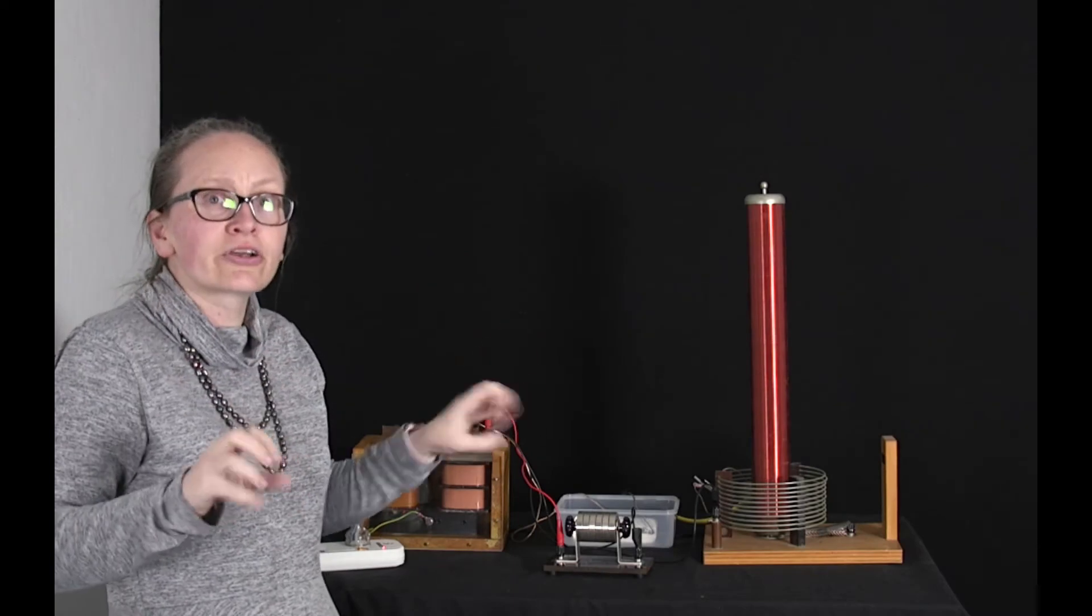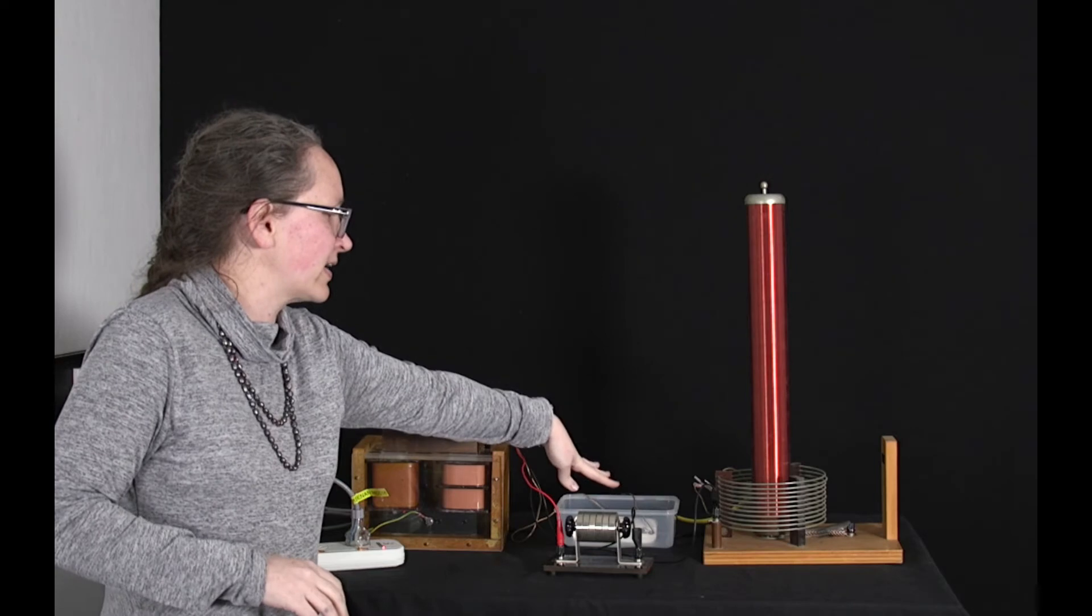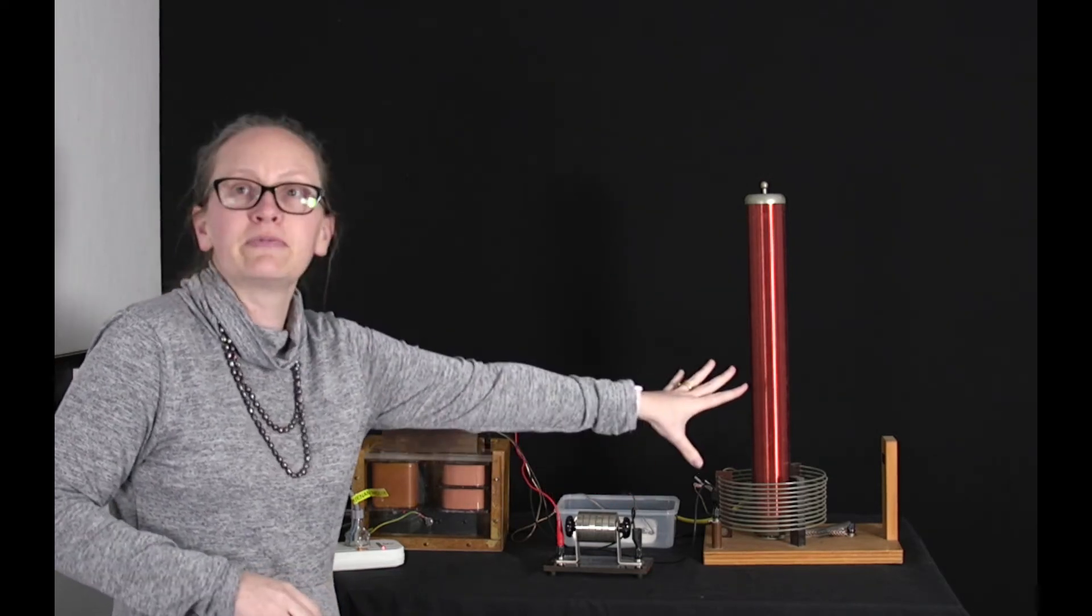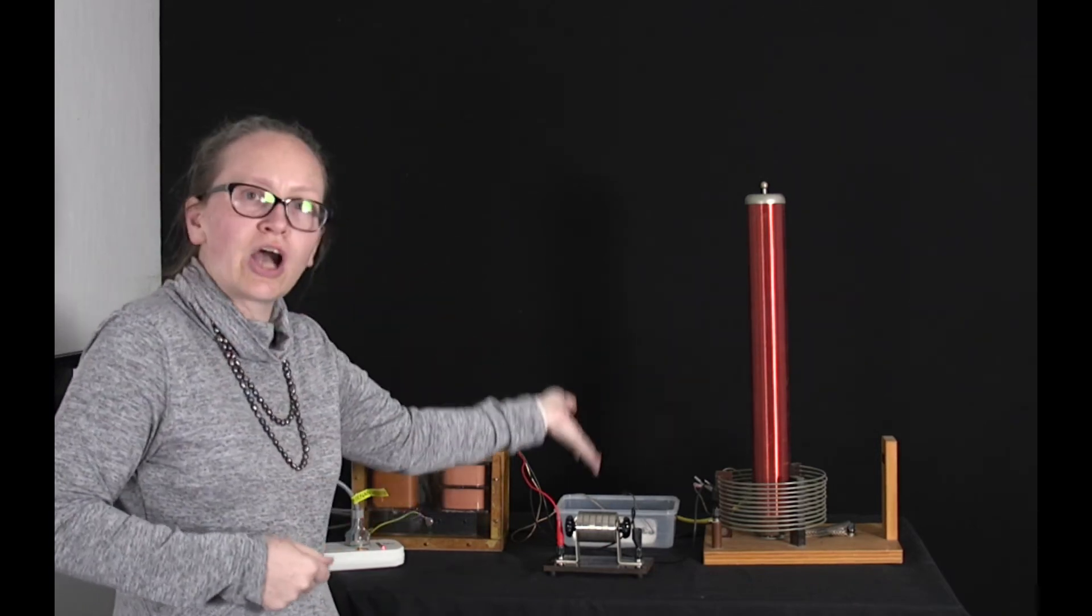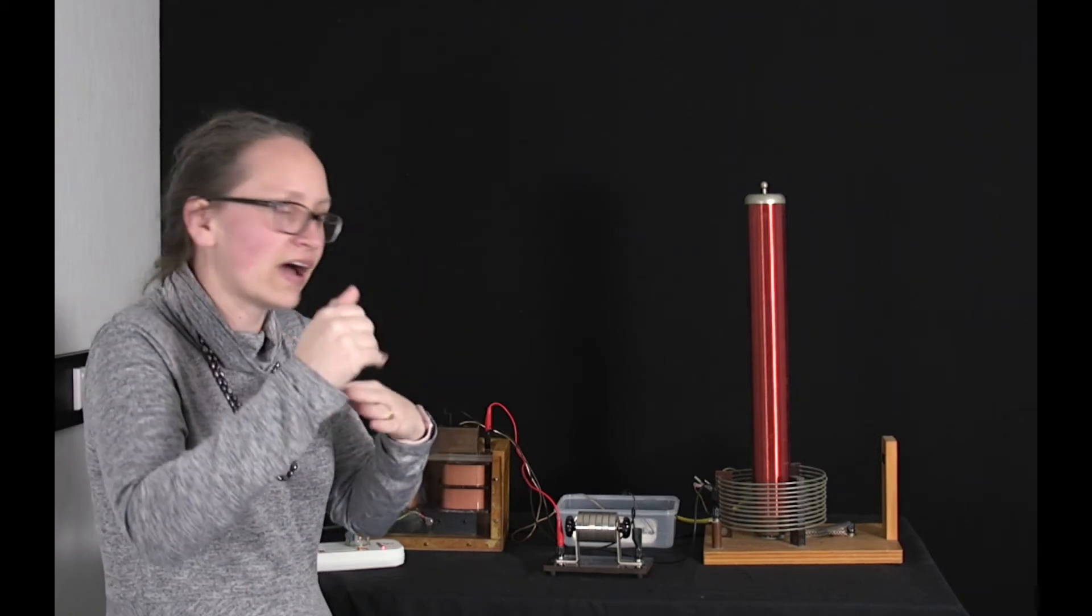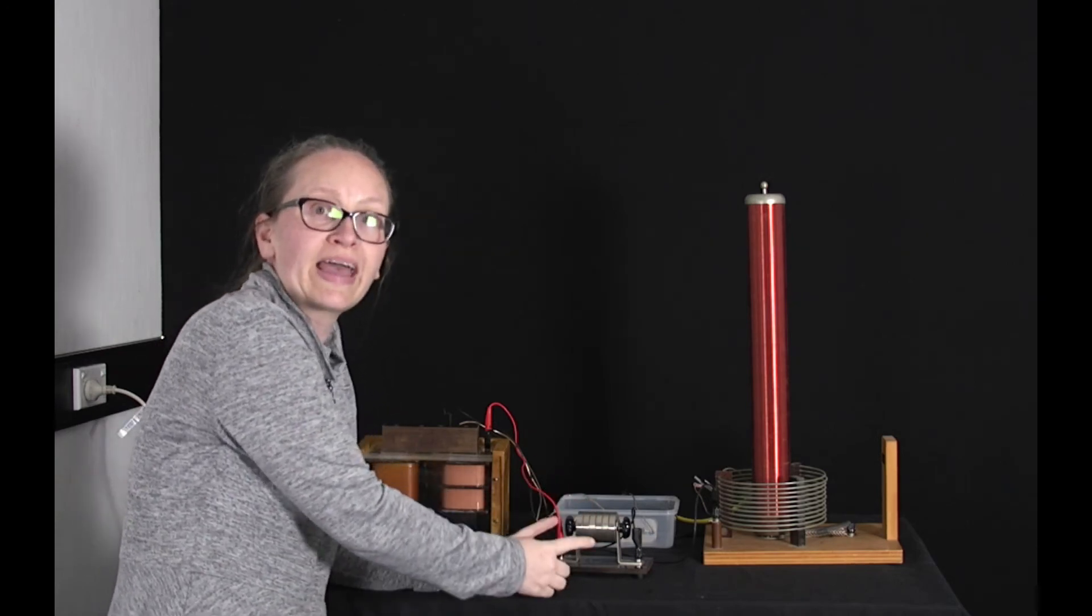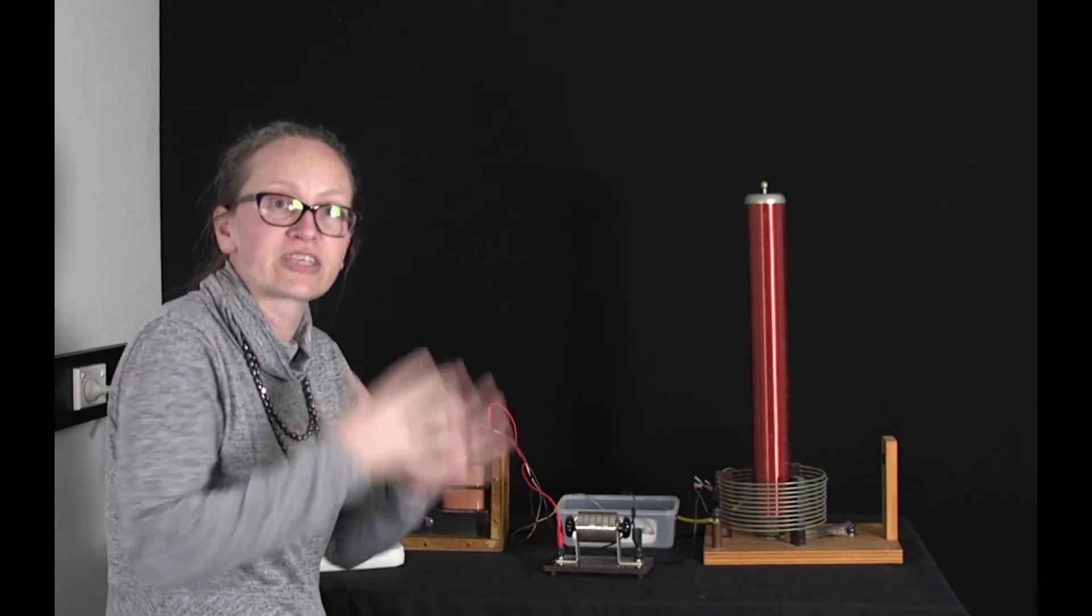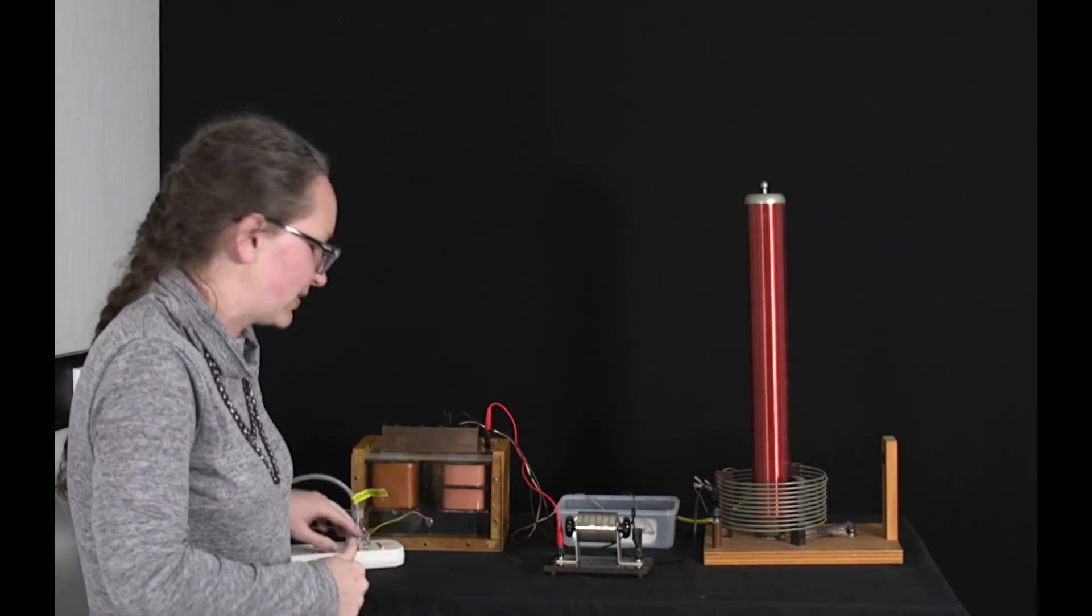So a Tesla coil consists of four components. We've got a power supply, we've got a capacitor, an air gap here and here we've got a transformer. So the capacitors charge up. Once the charge on the capacitor gets high enough then that charge induces an electric field across the spark gap which is high enough to rip apart the air molecules ionizing them which allows sparks to jump across the spark gap like this.